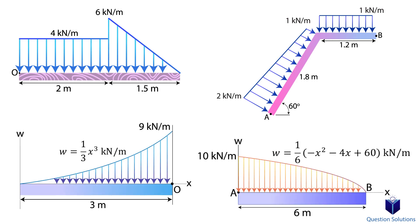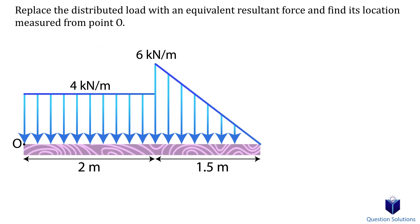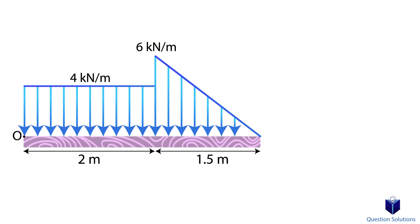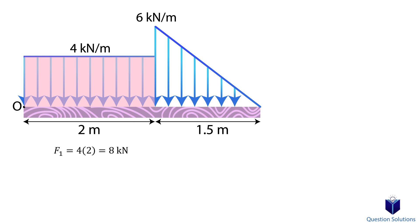The first two examples will be simple shapes, and the last two will be with integrals. Let's take a look at this problem, where we have to find an equivalent resultant force and find its location measured from point O. Notice how the 4 kN/m load is a square and the 6 kN/m load is a triangle. Since these are basic shapes, we don't need to integrate — we just need to figure out the area of each load. Let's start with the square-shaped load: all we do is multiply the length by the load. We place this force at the midpoint of its length, which is 1 meter away from point O.